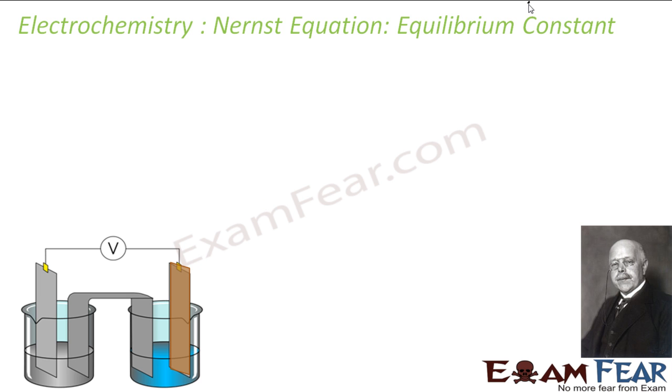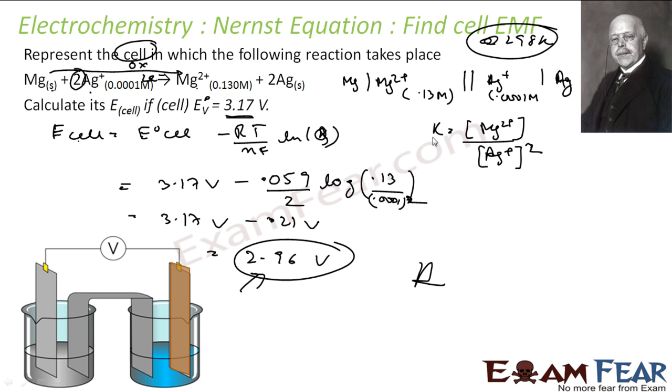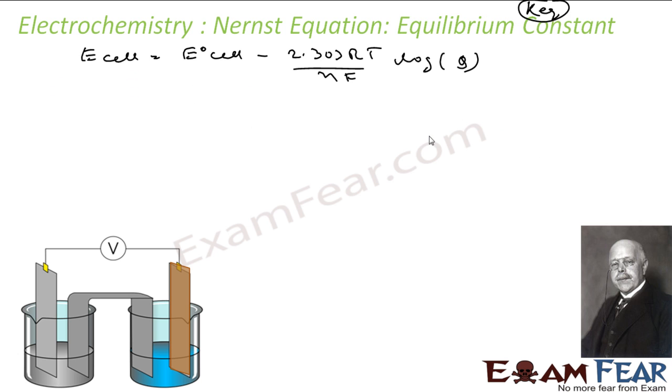The Nernst equation can be used to find the equilibrium constant. That equation we have: E cell is nothing but E° cell minus 2.303RT by NF log of Q. Now at equilibrium what will happen? Q will become K, and at equilibrium the cell will become dead.